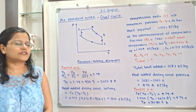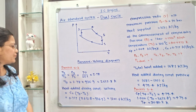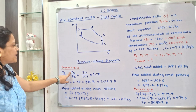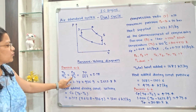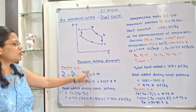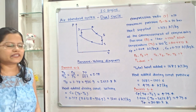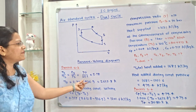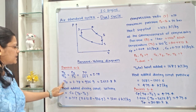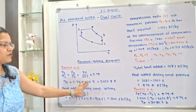For process 2 to 3 (constant volume): T3/T2 = P3/P2 = 70/25.1 = 2.78. Therefore T3 = 2.78 × 936.9 = 2612.8 K.